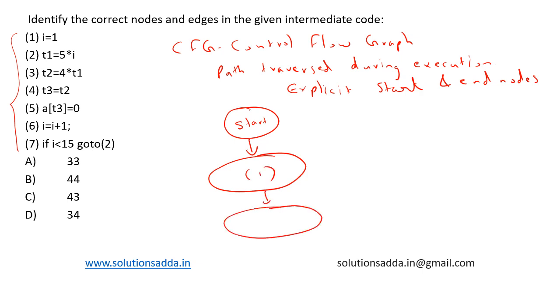Then there's a node to execute statements two till seven—that executes as a single block. Then if i is less than 15, it goes to code number two—that is, again this whole loop is repeated, so we have a self-loop.